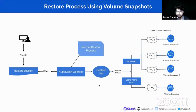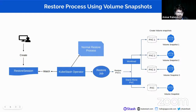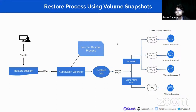In this section I am talking about the restore process using volume snapshots. This is like the inverse of the backup process. At first, a user creates a restore session. The KubeStash operator watches this restore session and starts a normal restore process. The KubeStash operator resolves all add-on functions and the provided volume template and creates a restore job. The restore job is responsible for restoring.